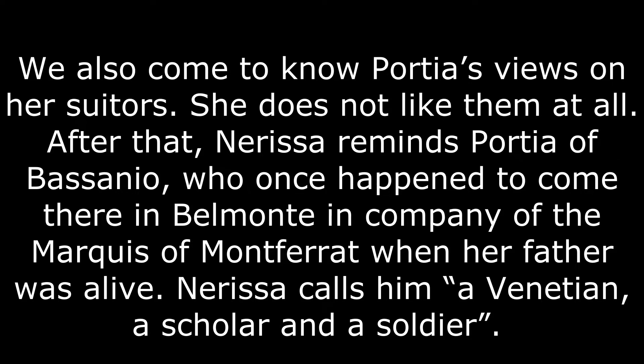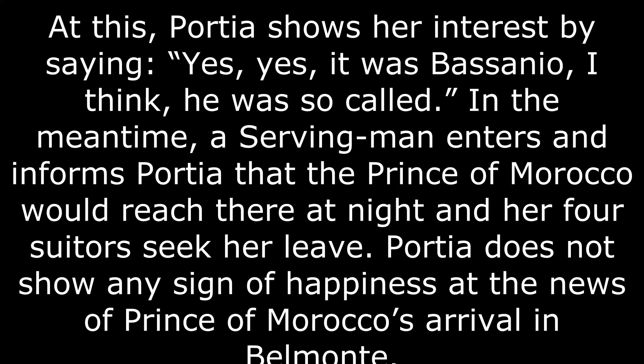Nerissa reminds Portia of Bassanio, who once came to Belmont in company of the Marquis of Montferrat when her father was alive. Nerissa calls him a Venetian, a scholar and a soldier. At this, Portia shows her interest by saying, 'Yes, yes, it was Bassanio — I think he was so called.' In the meantime, a serving man enters and informs Portia that the Prince of Morocco would arrive that night and her four other suitors seek their leave. Portia does not show any sign of happiness at the news of the Prince of Morocco's arrival in Belmont.